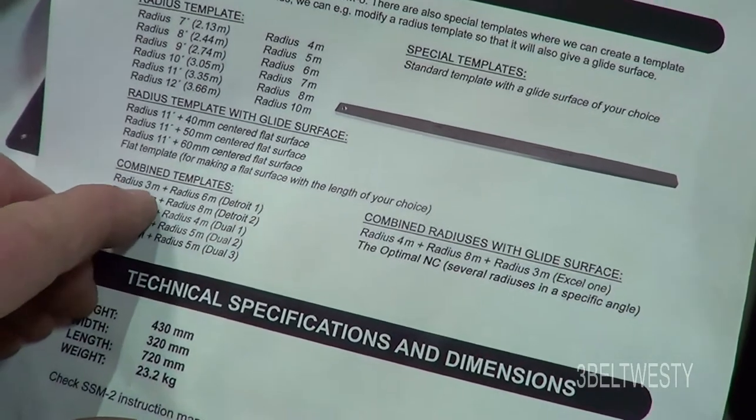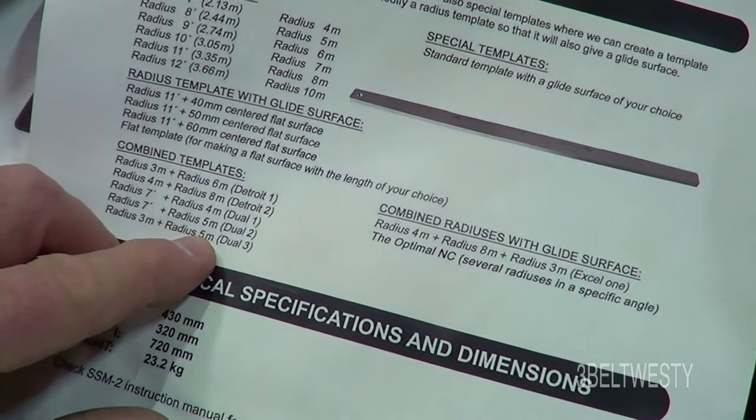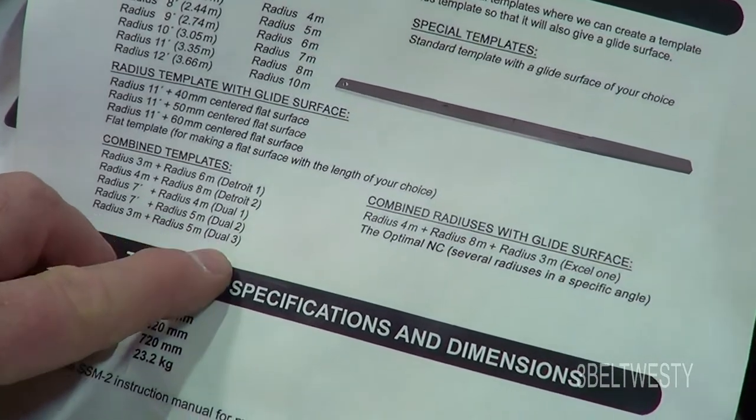Detroit 1 was a 3 and 6 meter radius, a 4 and an 8 was a Detroit 2. They had one called dual 1, 2, and 3.